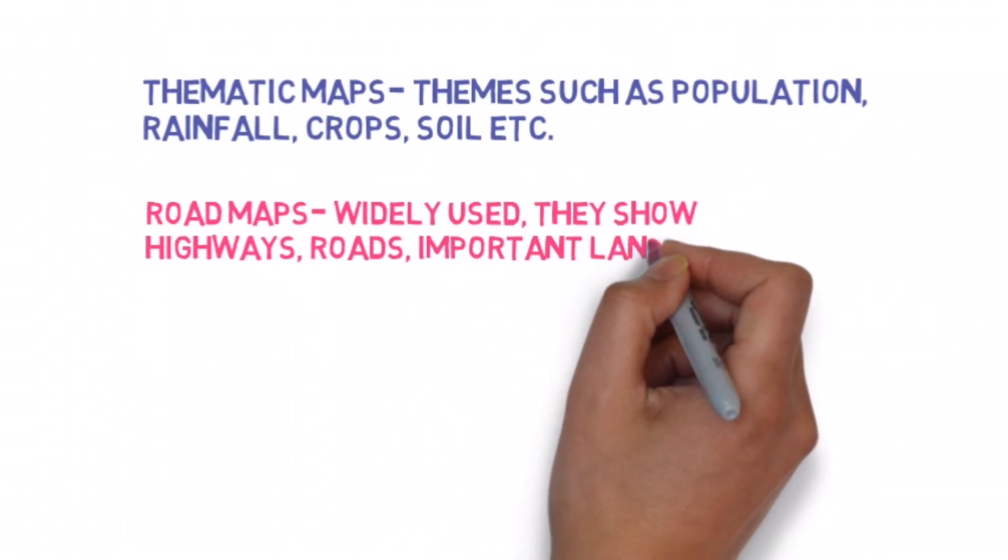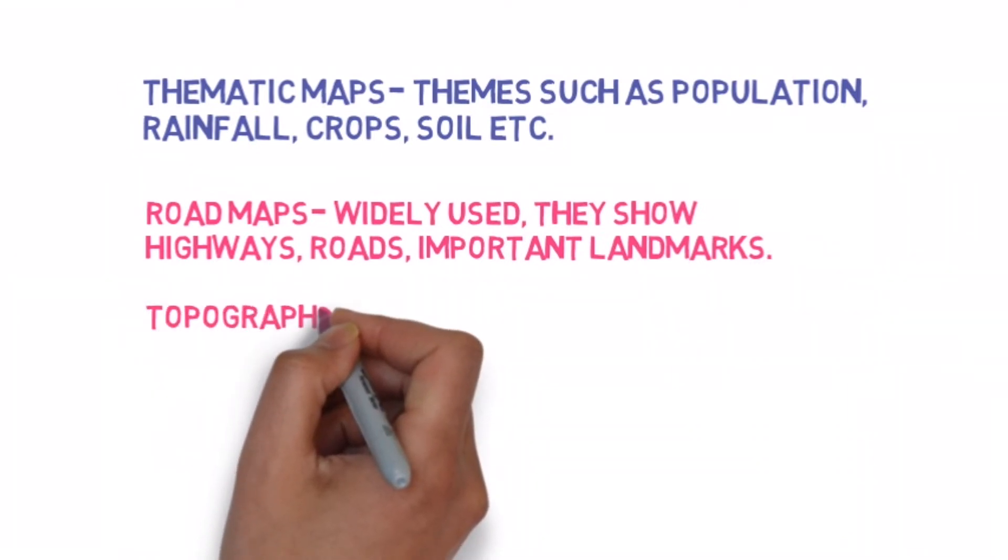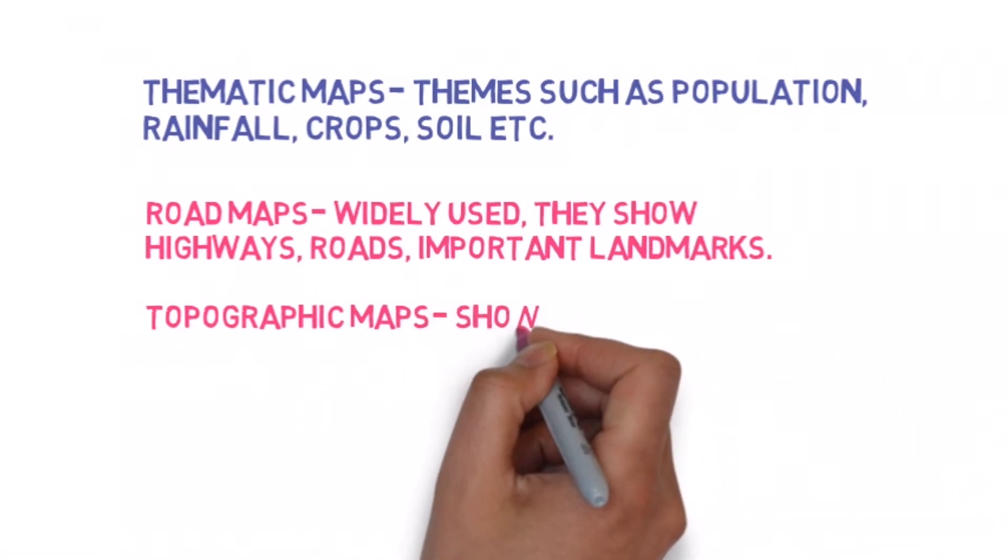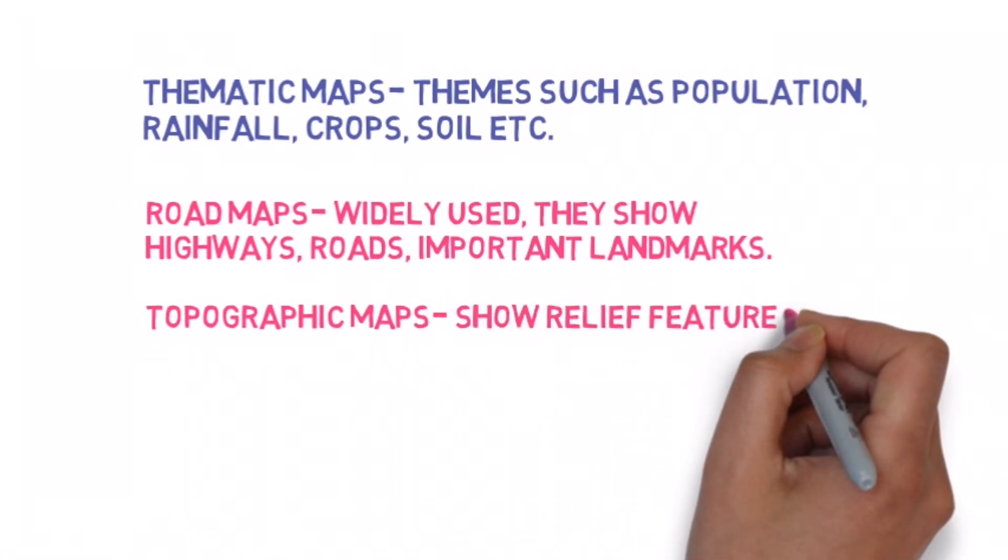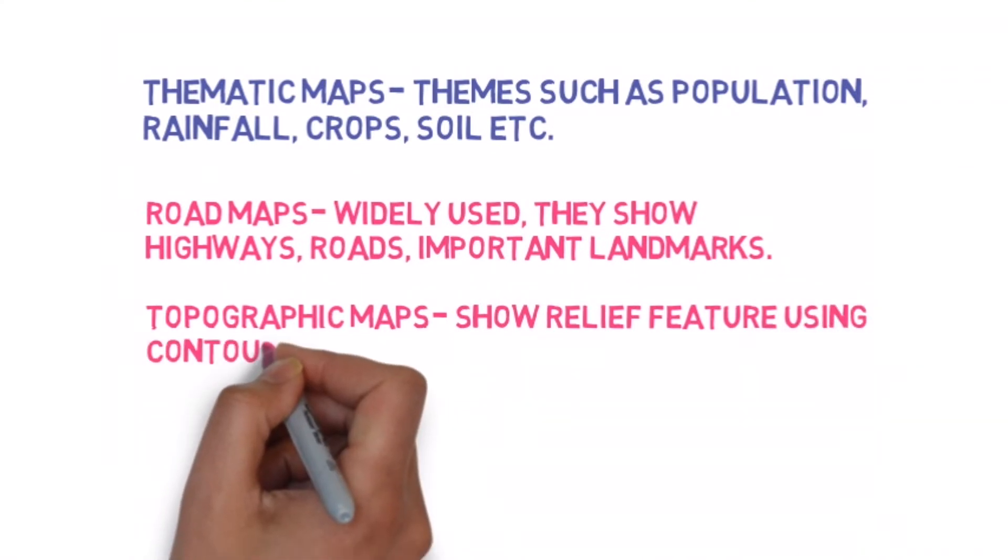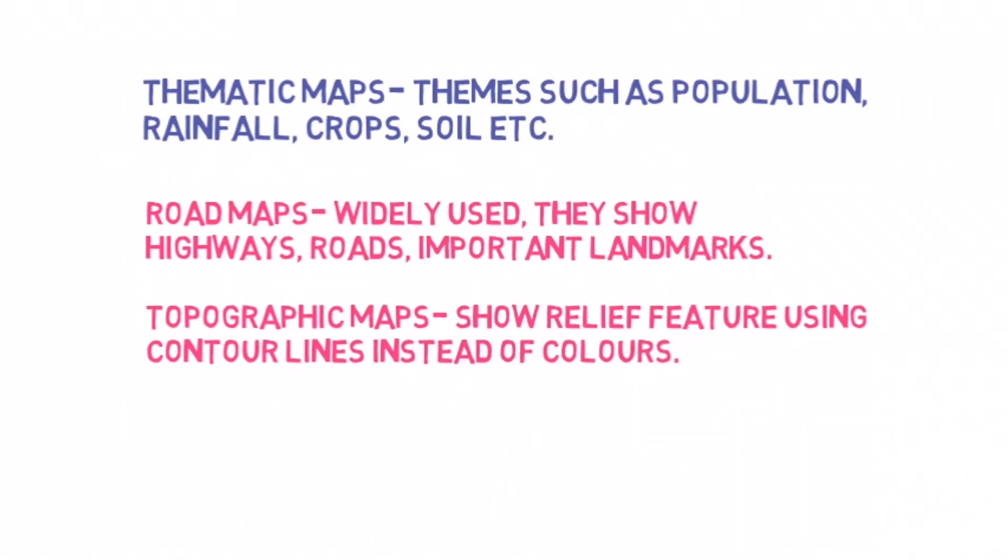And lastly, the topographic maps. These are somewhat similar to physical maps, that is, they show the relief features. However, the difference is that topographic maps use contour lines instead of colors to point out a particular relief feature. So they do not have any colors for mountains, hills, plateaus, rivers, and oceans. They have contour lines to point out these relief features.